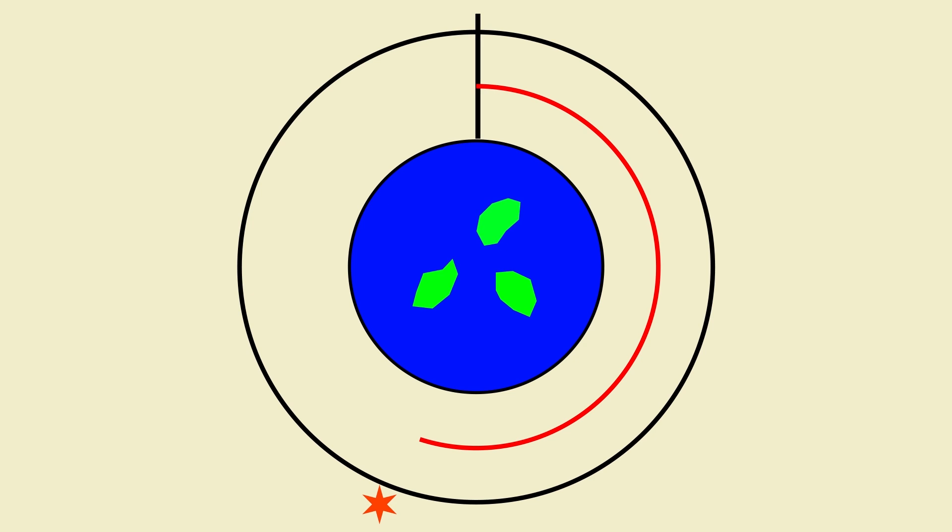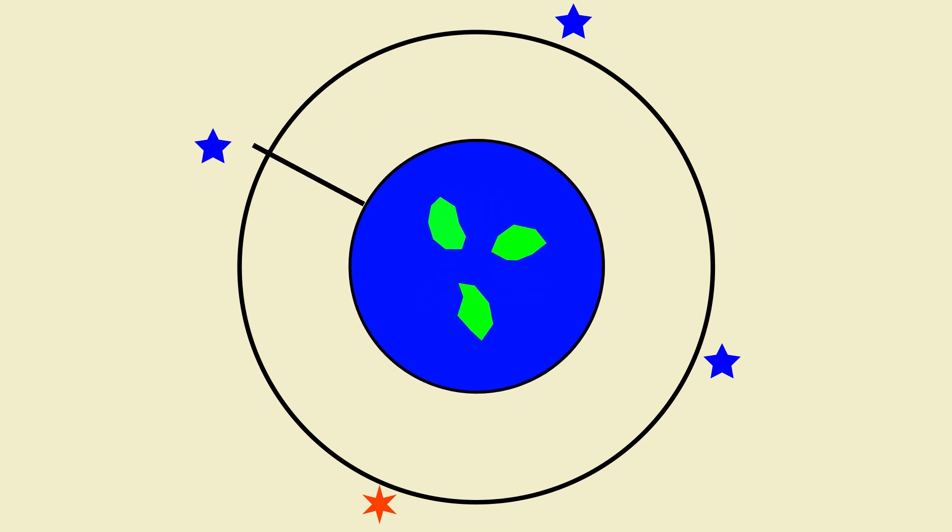Where we're given the sidereal hour angle of a star is just a fixed distance from Aries. A sidereal hour angle of 0 degrees would line up the star with Aries. 90 degrees would place the star here, 180 would place it here, and 270 would place it here. Stars are effectively fixed on the celestial sphere, so they always maintain the same position relative to Aries.